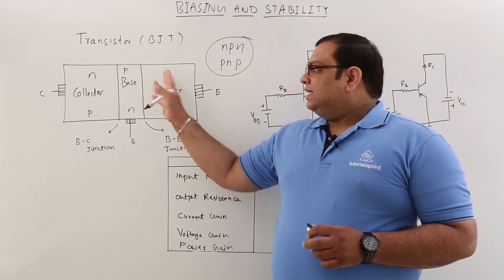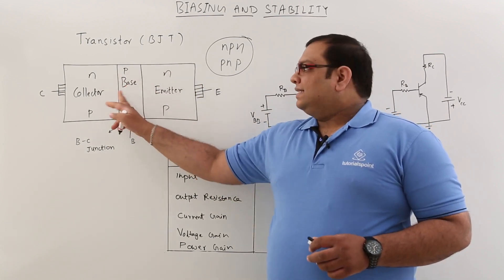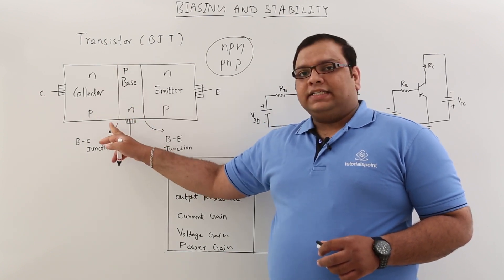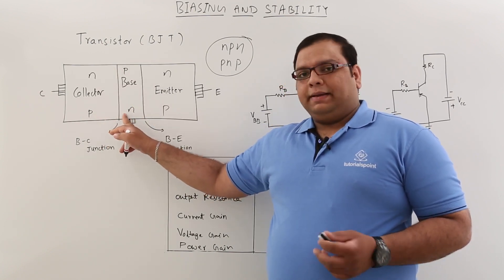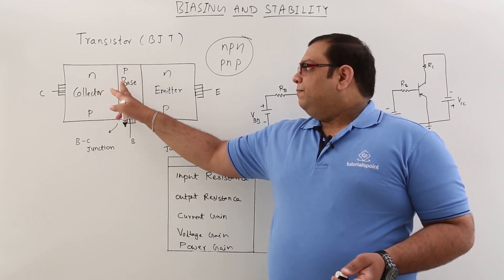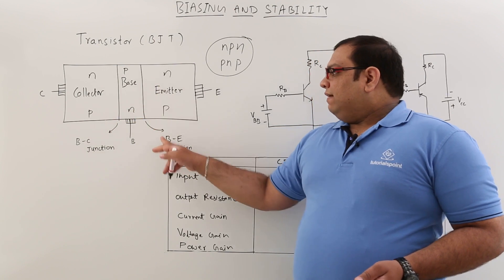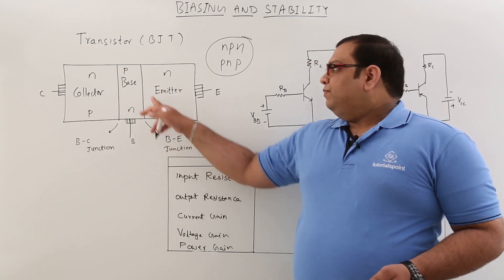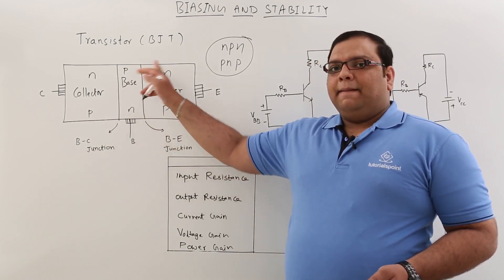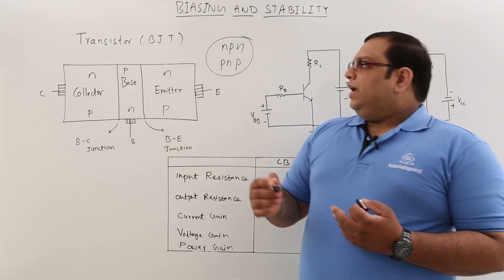In both transistor types, we have a base-collector junction and a base-emitter junction. Both of these are PN junctions. The base-collector junction is a PN junction, and the base-emitter junction is also a PN junction diode. So when you simplify the transistor, it consists of two PN junctions.